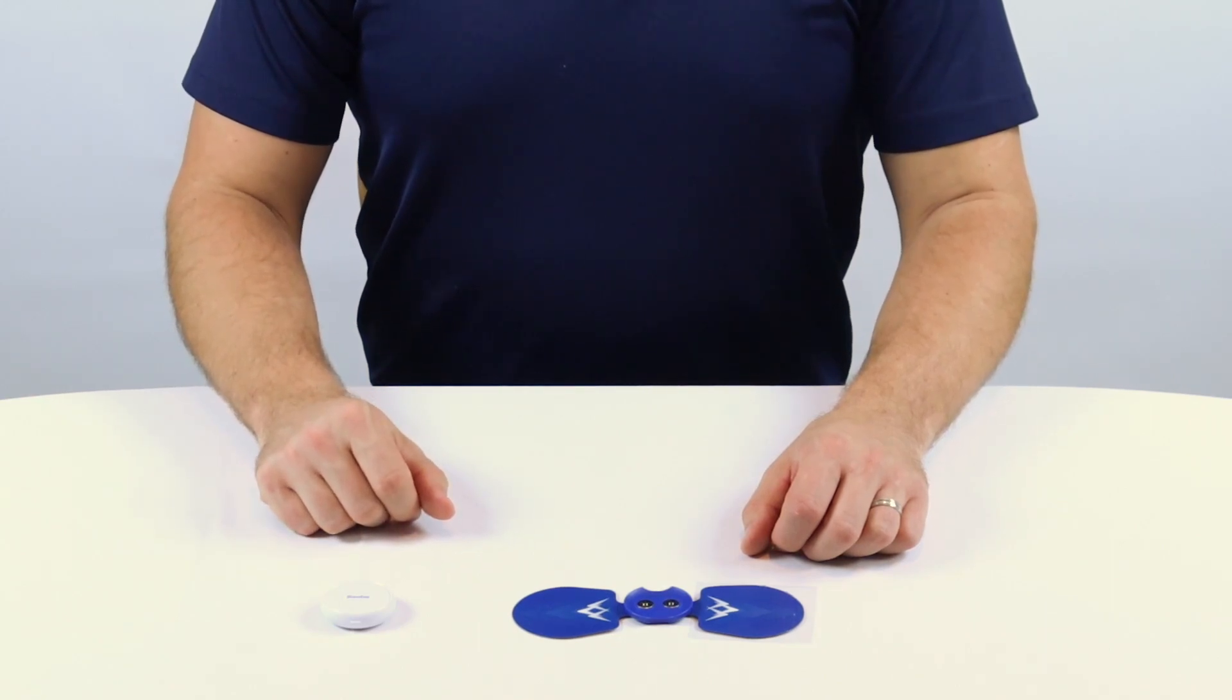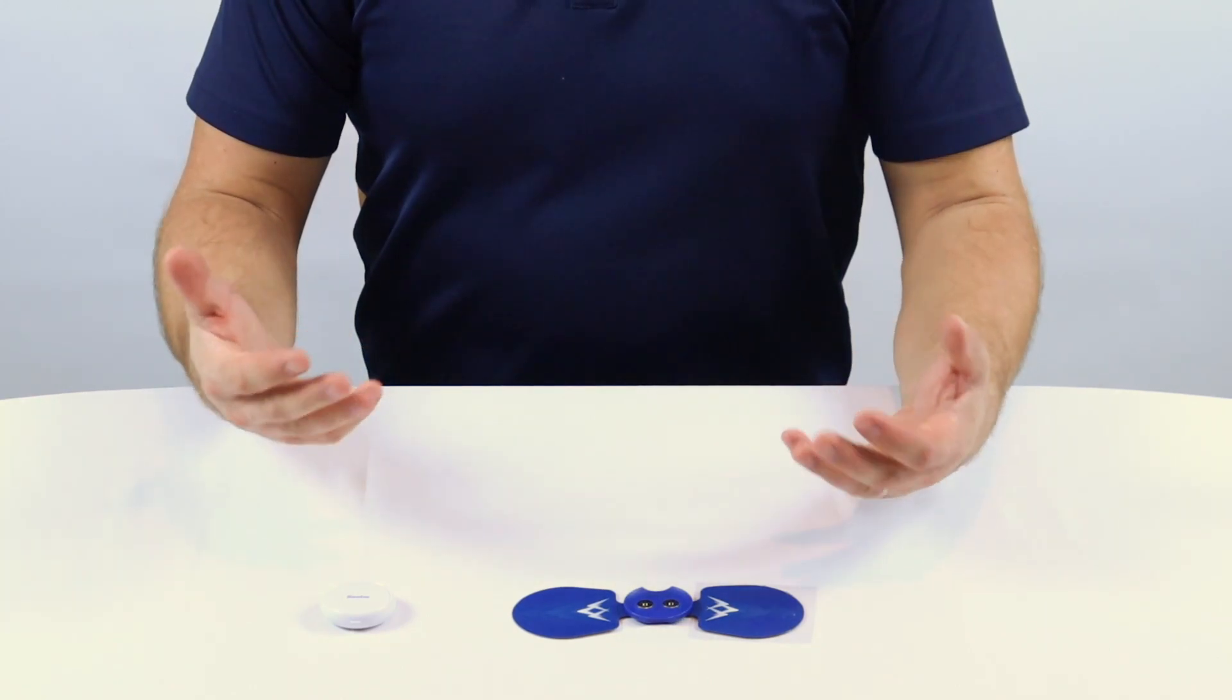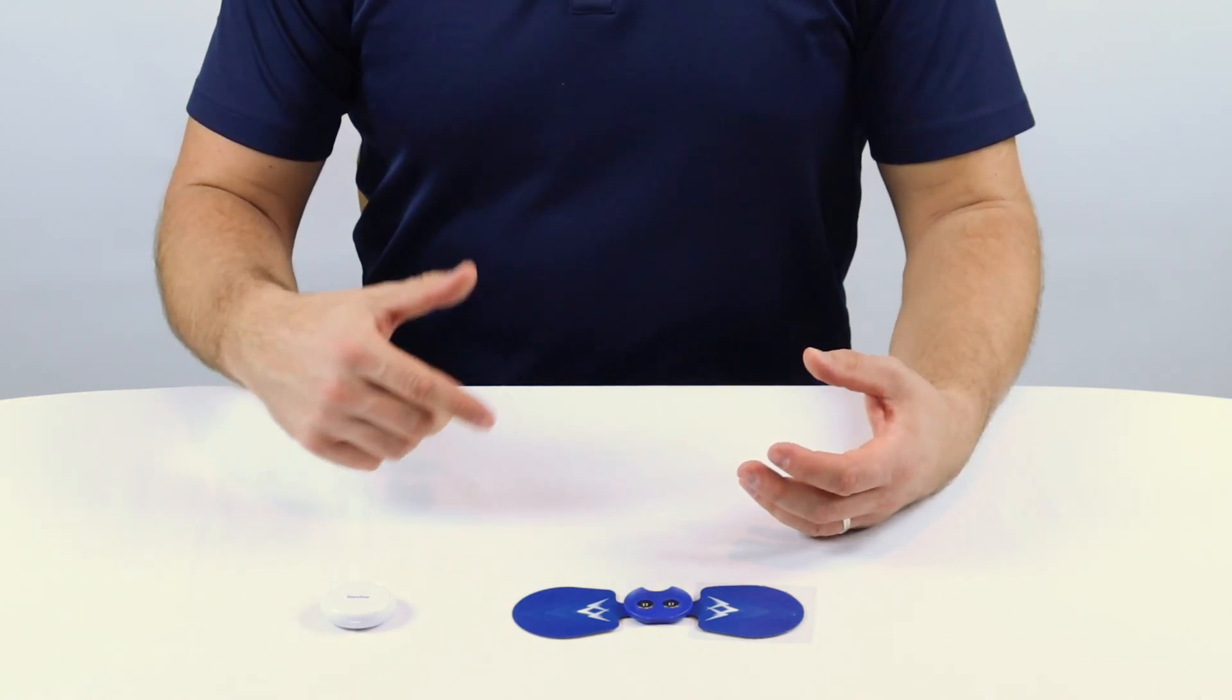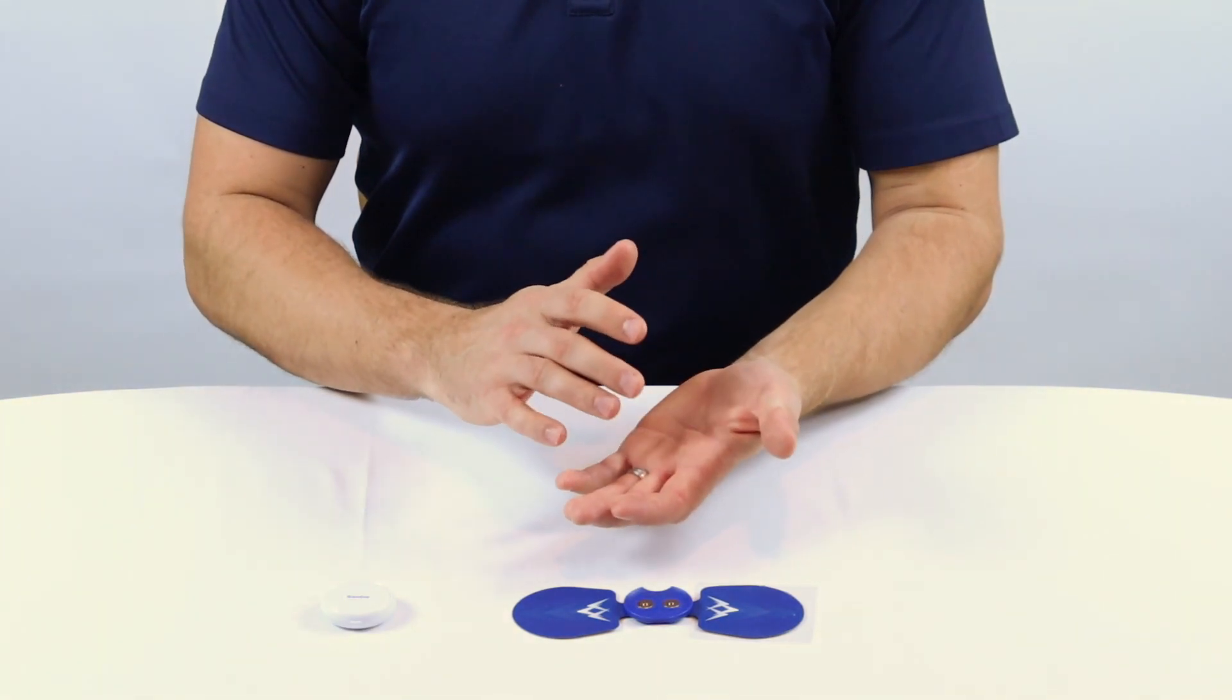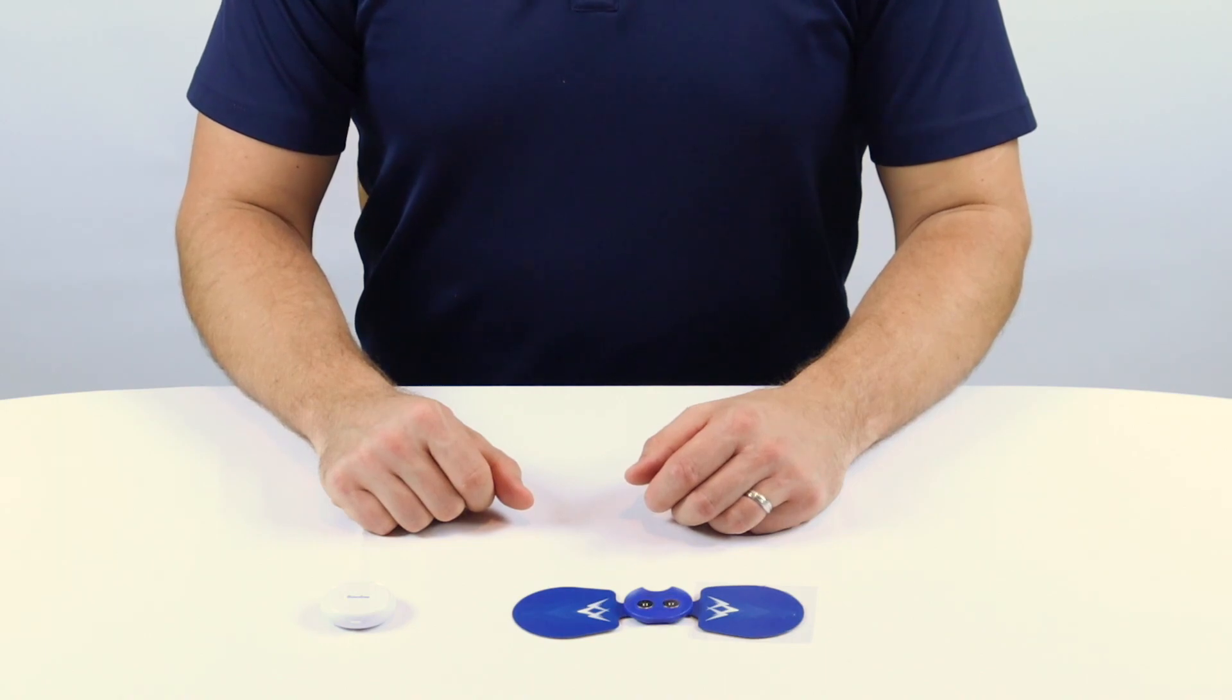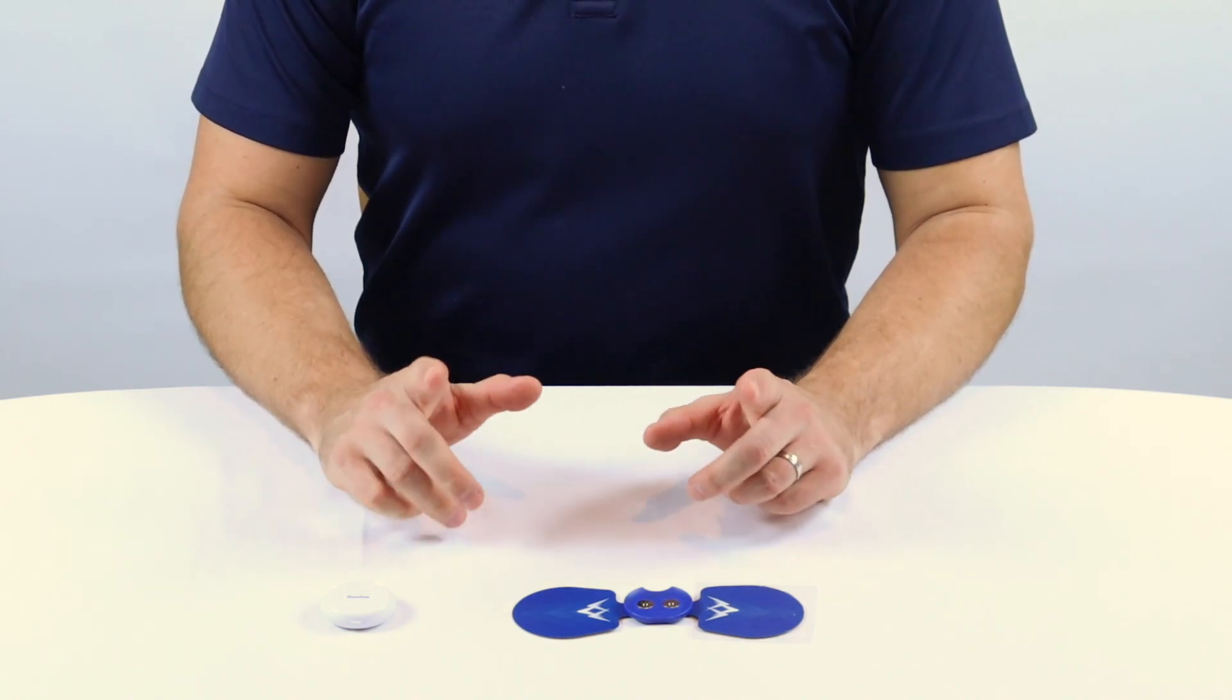Another commonly asked question about the Sabostim Go is, what is the best way to change the gel pads on the wings? It's important to change the gel pads because after a while, you'll notice that the gel pads will no longer be sticky, affecting the Sabostim Go's performance. Changing the gel pads is much easier than you might think.